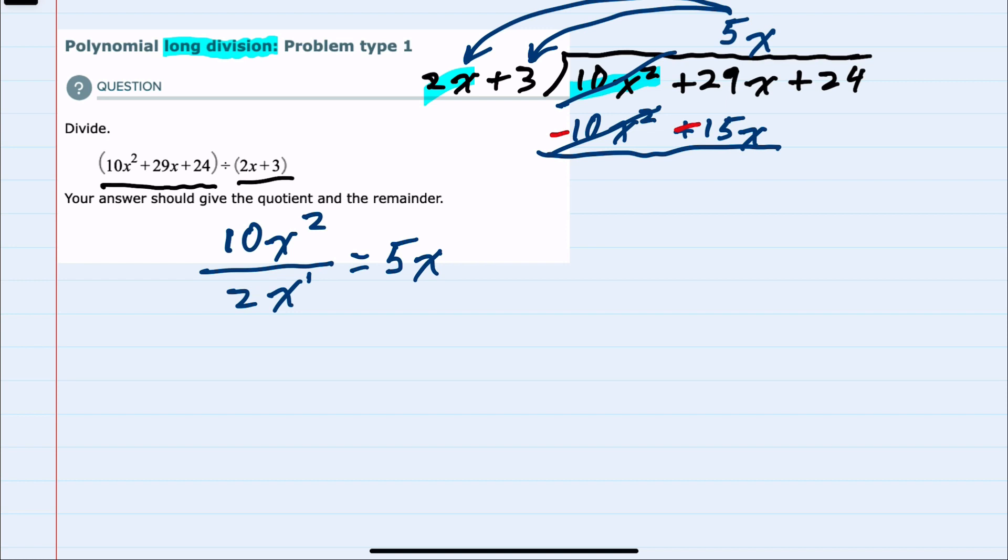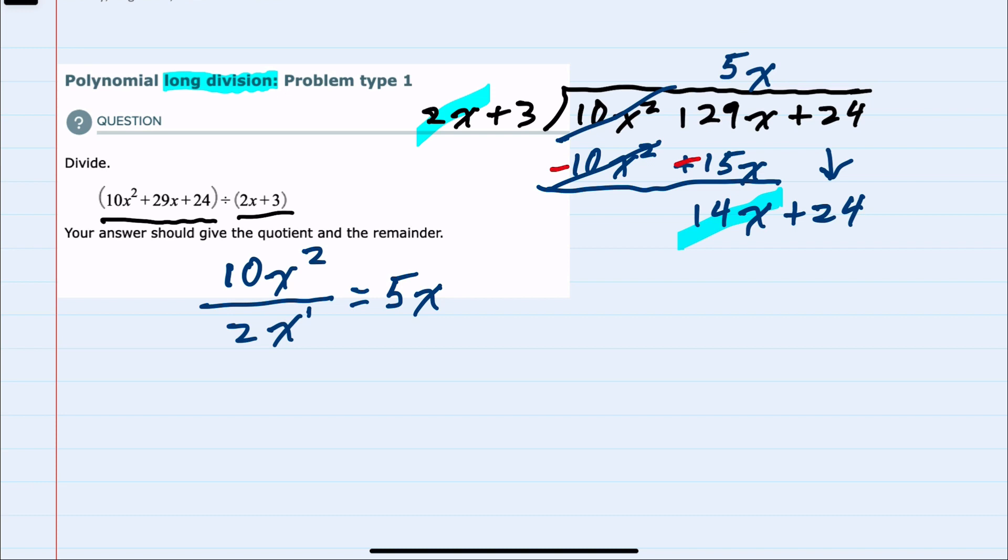For the second term, I have 29 minus 15, both of those with x's. So 29x minus 15x is 14x. And from here, I could bring down the next term. And again, I would look at the leading terms, set those up as division.